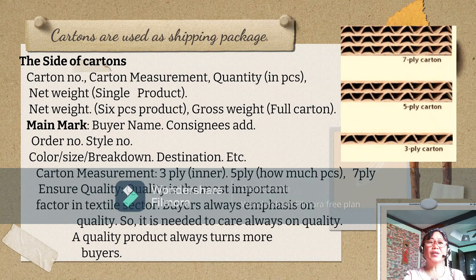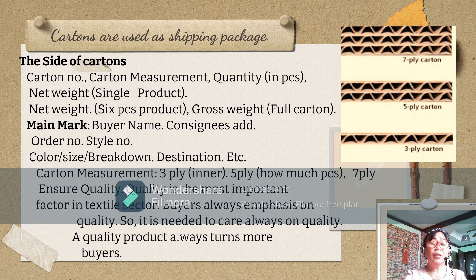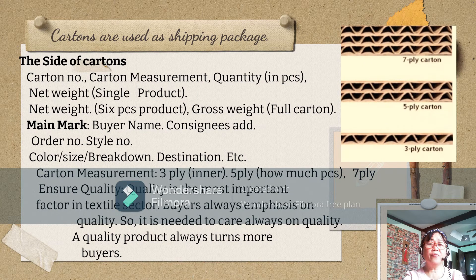Basically, cartons are used as shipping packages. On the side of the cartons, you will see the carton number, carton measurement, quantity in pieces, net weight in single product, net weight in six-piece product, and gross weight for the full carton. We also have the main mark: the buyer name, consigning address, order number, style number, color, size, breakdown, destination, etc. The carton measurement types are 3-ply inner, 5-ply, and 7-ply.